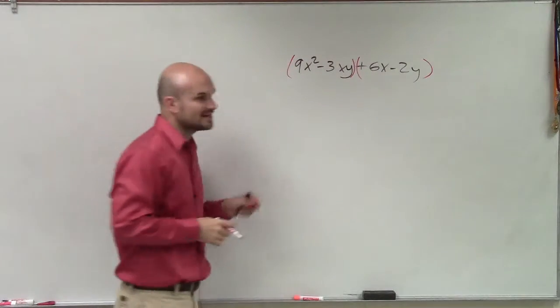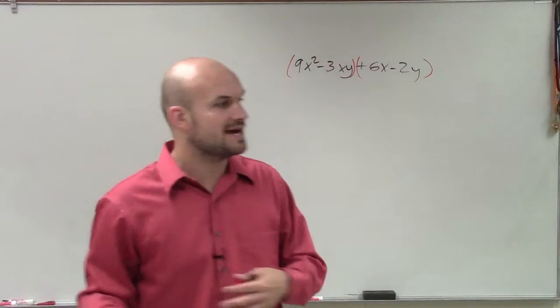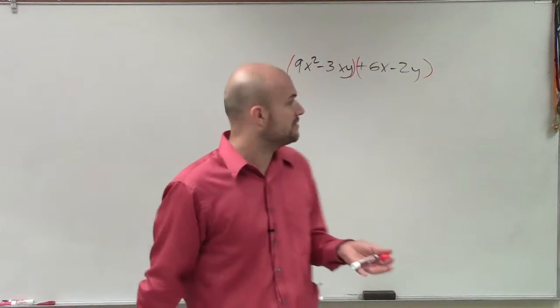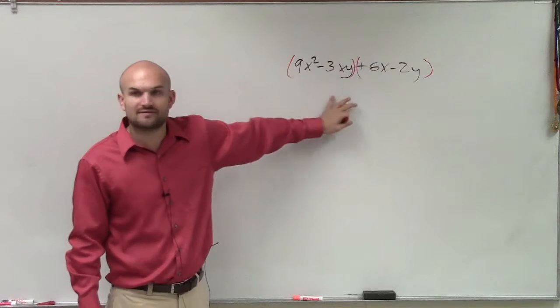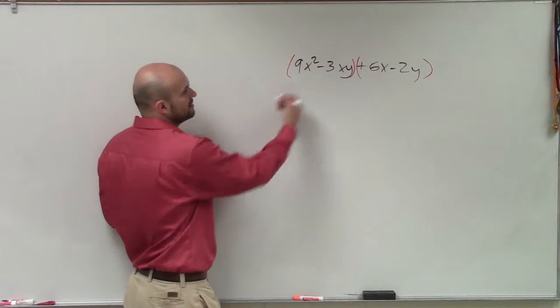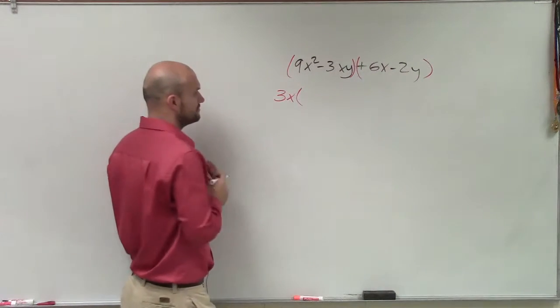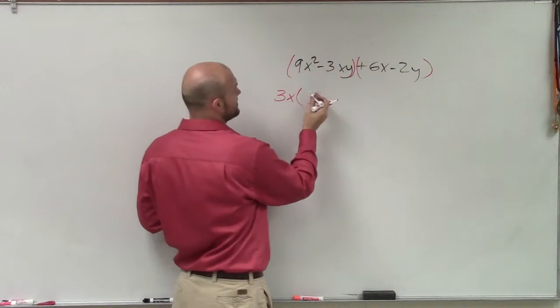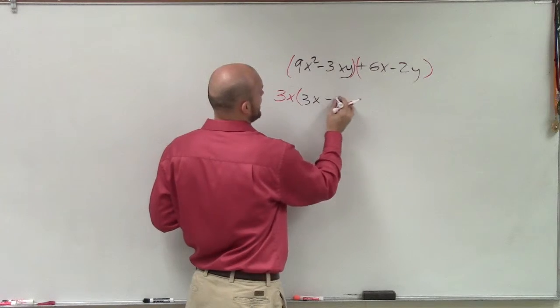On the grouping technique, we group the first two terms and the last two terms. Then from each one of those, we factor out what they have in common. So you look at 9x² minus 3xy and say, what do those two have in common? Well, we can factor out 3x. By factoring out 3x, you're left with 3x minus y.